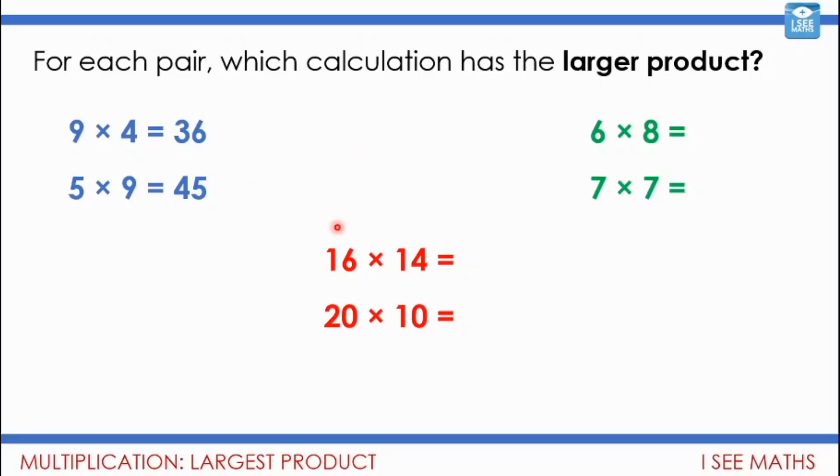Let's have a look at the next one. So 16 times 14, I'm not sure I know that off the top of my head, and 20 times 10. Well, 16 add 14 is 30. 20 add 10 is 30. But 16 times 14, those numbers are closer together than 20 times 10. Now let's have a look at the products. Yeah, 16 times 14 is 224, and that's more than 20 times 10.